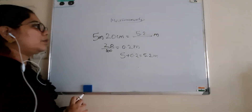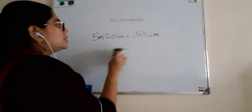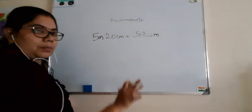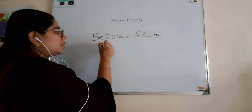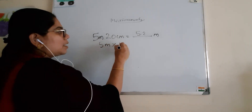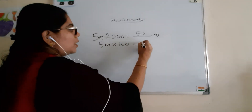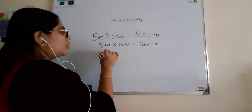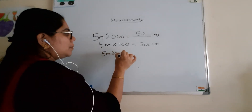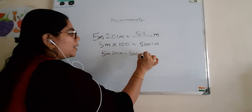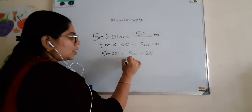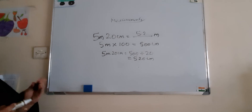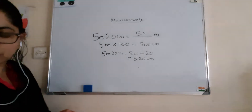Now we convert 5 meter 20 centimeter to centimeter. Already we have 20 centimeter, so that stays as such. Now convert the meter: 1 meter equals 100 centimeter, so 5 meters into 100 equals 500 centimeter. Therefore 5 meter 20 centimeter equals 500 plus 20 centimeter, which equals 520 centimeter.